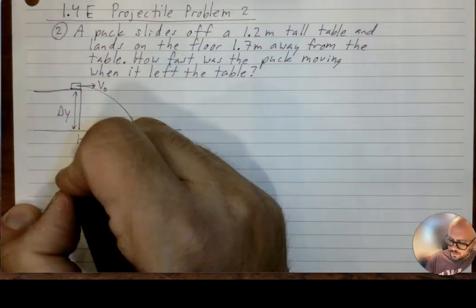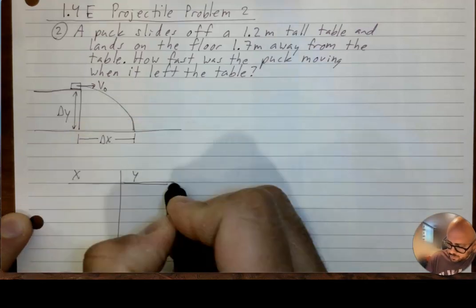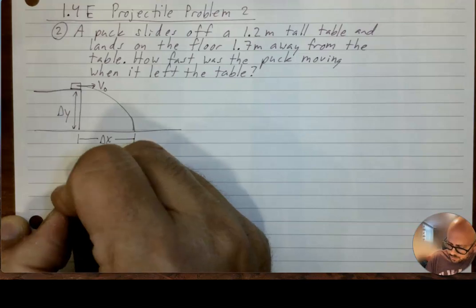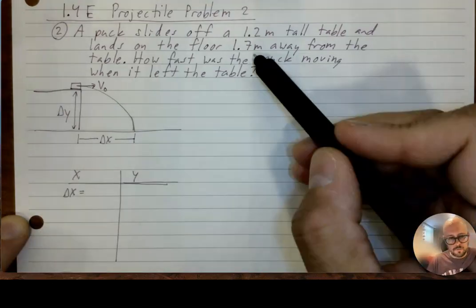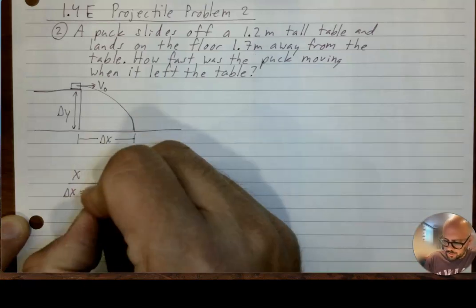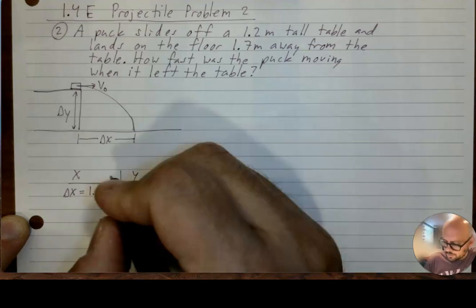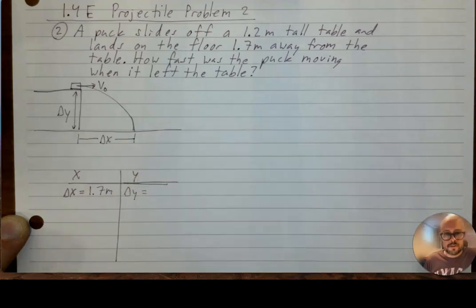As far as the x and y variables are concerned, I'm going to start to fill those in right away. Delta x, it says it lands on the floor 1.7 meters away from the table. So 1.7 meters is my delta x.